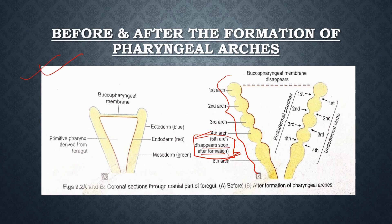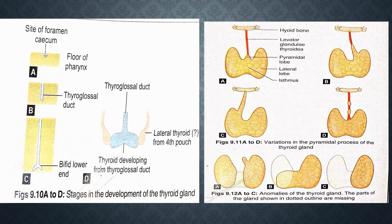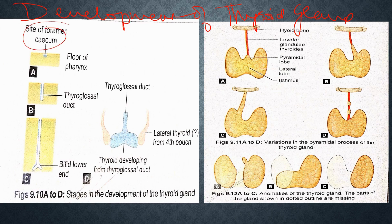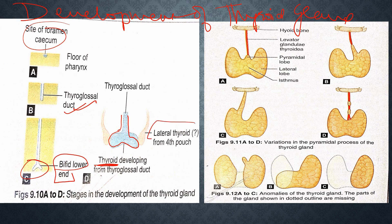Please mark these diagrams in your book. Taking it forward, we have the diagram for development of thyroid gland. The foramen cecum elongates to form the thyroglossal duct, which further bifurcates — the lower end leads to formation of the thyroid. These are the two lobes of the thyroid gland. The lateral thyroid gland derives from the fourth pharyngeal pouch.